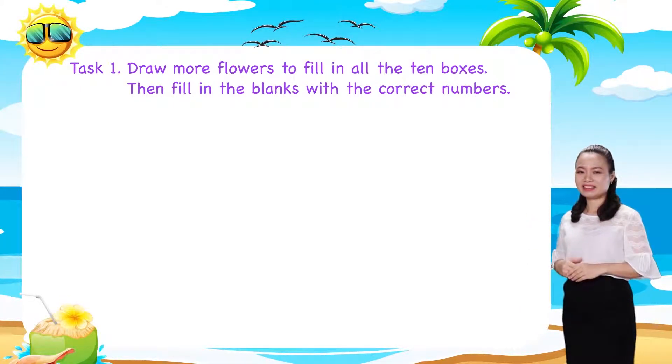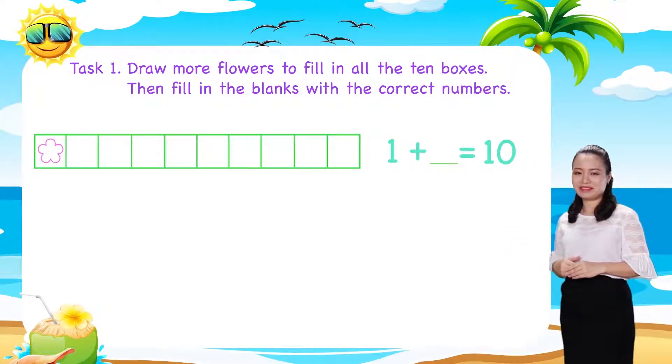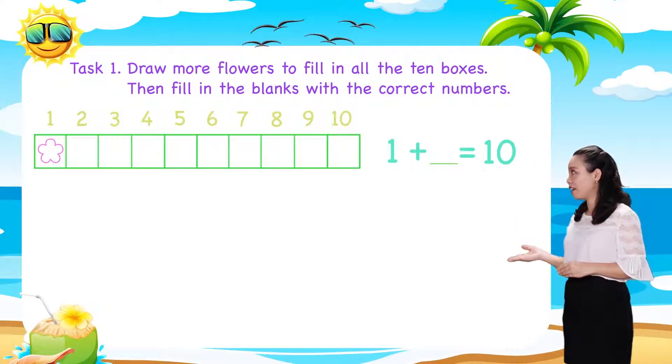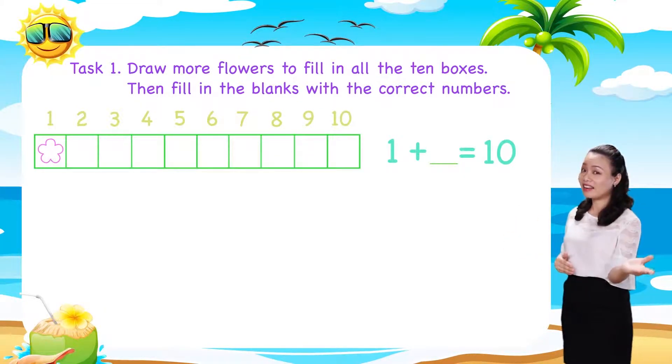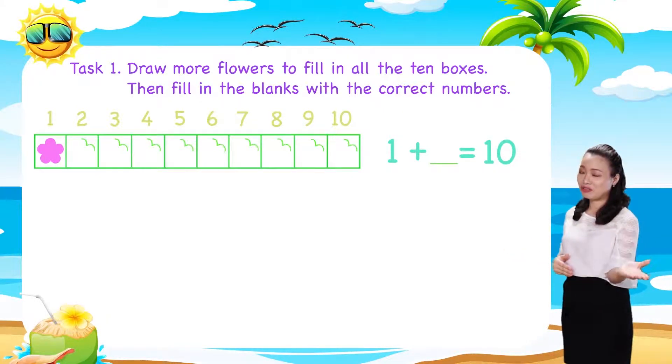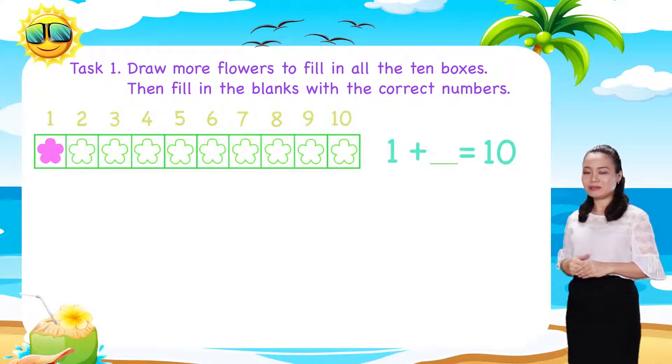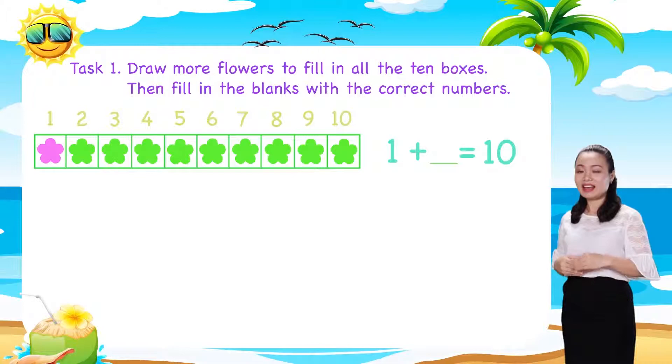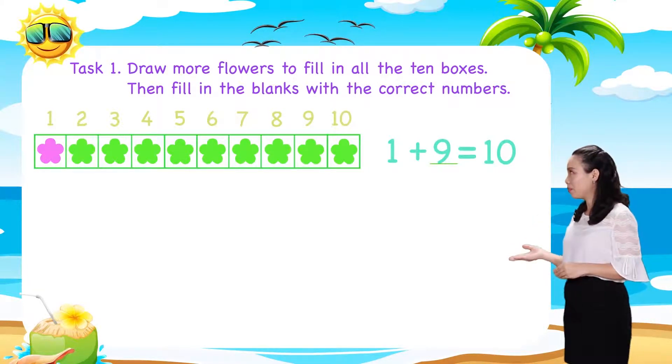Now, look at the first row. Here, we have 10 boxes and a flower. Colour it pink. 9 boxes are empty. Let's draw 9 more flowers. Colour them green. Thus, we have 1 plus 9 equals 10.